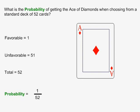In this example, what is the probability of getting the Ace of Diamonds when choosing from a standard deck of 52 cards? The number of favorable cases is 1, as there is only 1 Ace of Diamonds in the deck. The number of unfavorable cases is 51. The total number of cards in the deck is 52. Probability is favorable over total, so the probability of getting this card is 1 out of 52.